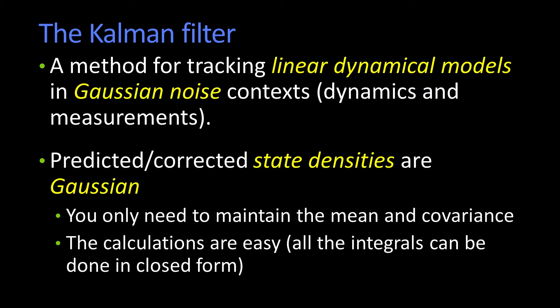Same thing with our measurements — they were a linear function of the state and then there was some noise. What was nice about it is everything: prediction, correction, your lunch break — it's all Gaussian. So the only thing you have to do is maintain the mean and the covariances of these Gaussians. It just works in 1D or ND, and the calculations are pretty straightforward — the equations looked a little ugly, but it's just a bunch of matrix multiplies and a couple of inverses.